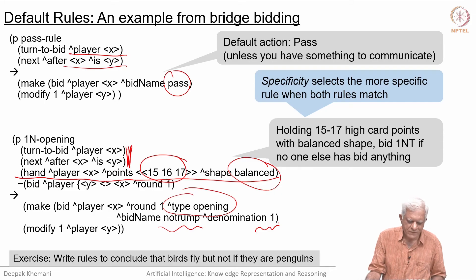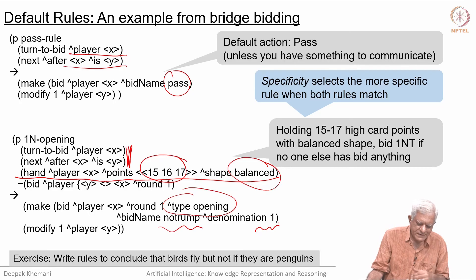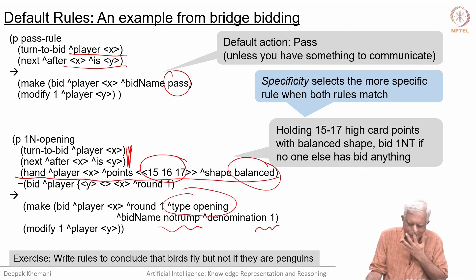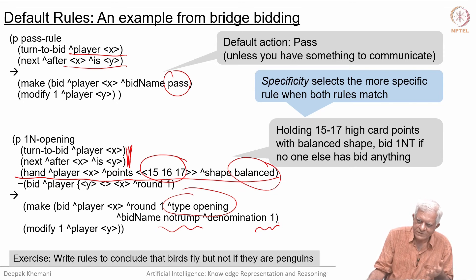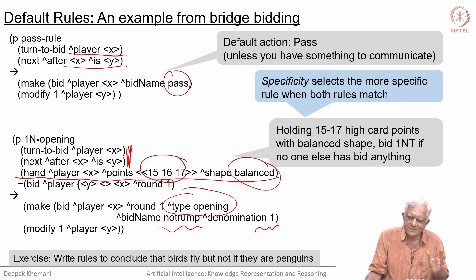We will look at default reasoning again. As an exercise, write two rules: one says that birds fly, and the other says that if you are a bird and you are a penguin, then you do not fly. You can see that specificity would help here, choosing the more specific penguin rule over the general bird rule.